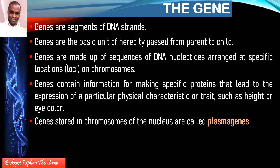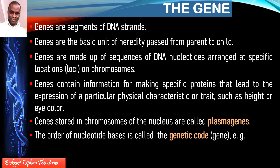There are plasmogenes — genes stored in the chromosomes of the nucleus. As discussed in part one, DNA is found not only in the nucleus, but also in mitochondria and chloroplasts. The genetic code of an organism is simply the nucleotide bases and the sequence in which they are arranged. A typical genetic code might look like A, C, C, G, G, T — that sequence can encode the shape of somebody's head or their height.